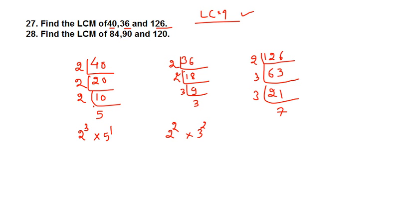The prime factors of 126 are 2 to the power 1, 3 to the power 2, and 7 to the power 1. Now when we find out the LCM, we will take all the prime factors whether they are common or not. I see that 2 is present.